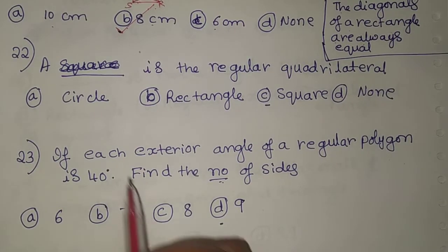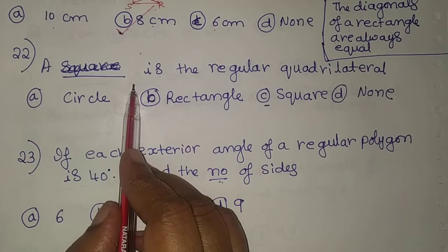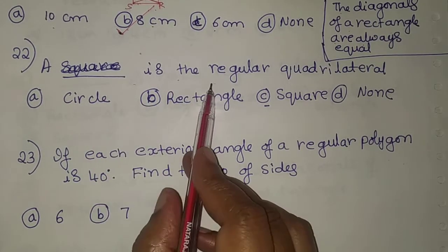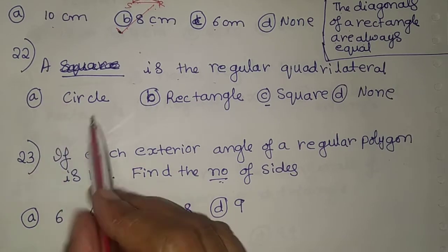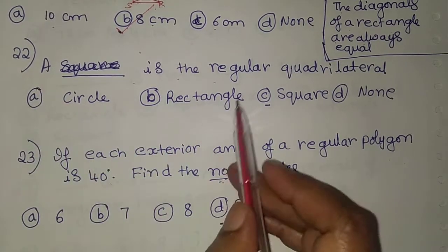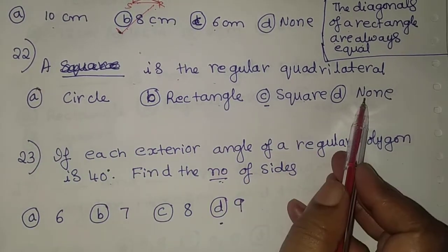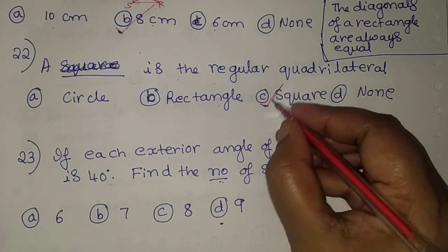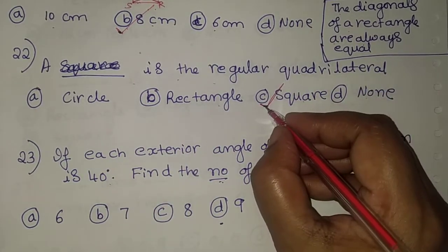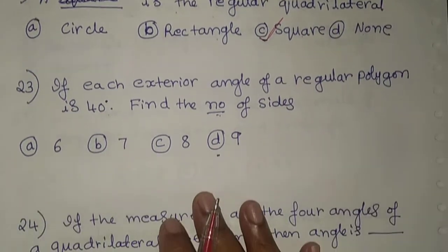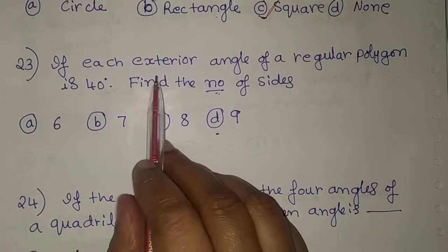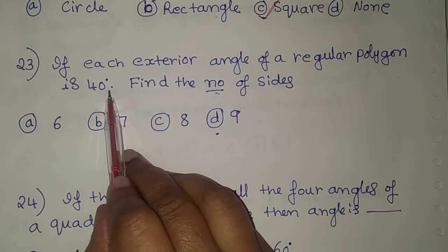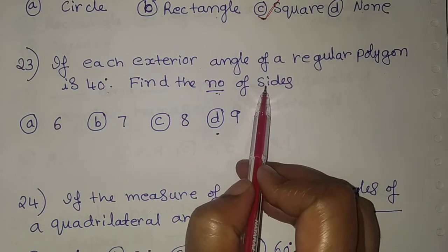The 22nd problem: a blank is a regular quadrilateral. Four options are given: circle, rectangle, square, and none. A square is a regular quadrilateral, so option C is the correct answer. The 23rd problem: if each exterior angle of a regular polygon is 40 degrees, find the number of sides. The answer is 9.